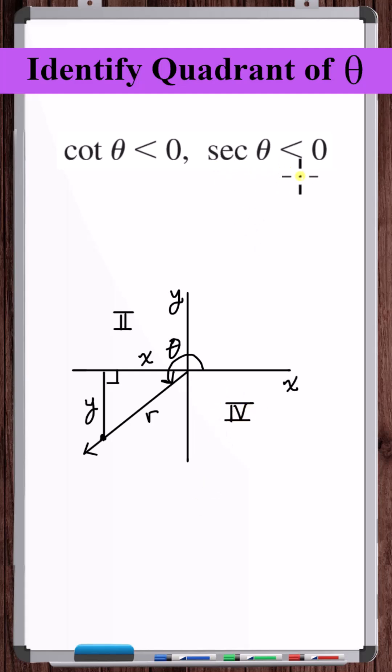Now when is secant negative? Secant is the reciprocal of cosine, so secant is hypotenuse over adjacent. R is always positive, so secant is negative in the second and third quadrants.